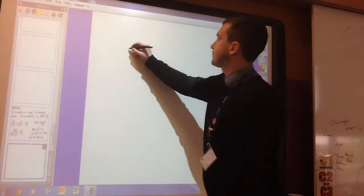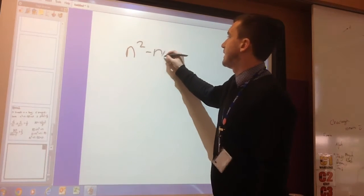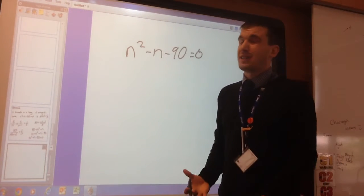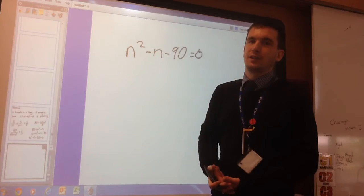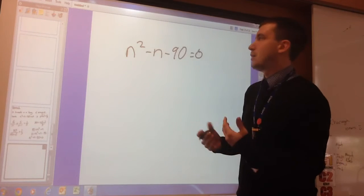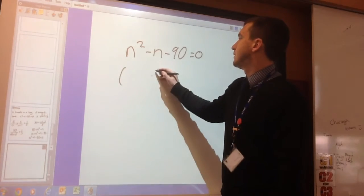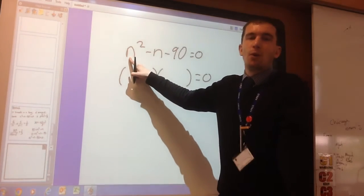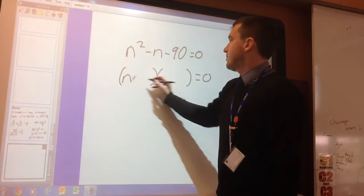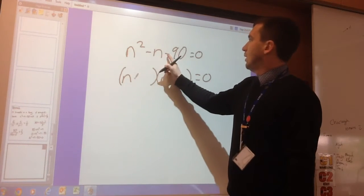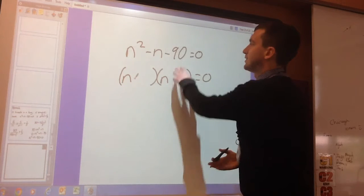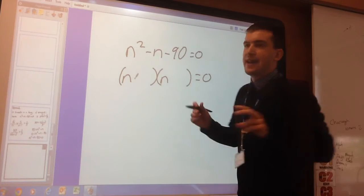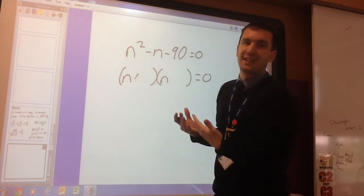To solve it, N squared minus N minus 90 is zero. That's factorizing a quadratic. Because it's on the non-calculator paper, odds are it's going to be one where it's two brackets. We always use the value there. Commonly it's seen with an X. This one is an N. And we need two numbers that multiply together to make negative 90, but add together to make negative 1. You can't see it, but it's negative 1 in theory.